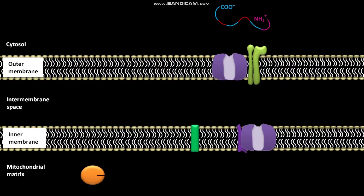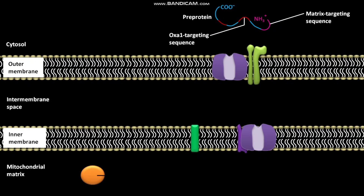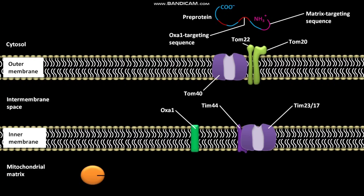Before discussing path B, let us discuss the receptors, channels, and pre-protein involved. A pre-protein having an N-terminal matrix targeting sequence and a hydrophobic OXA1 targeting sequence is present in the cytosol. The outer membrane of mitochondrion has TOM22 and TOM20 import receptors and a TOM40 general import pore. The inner membrane has TM44 protein, TM23, TM17 channel, and OXA1 protein.